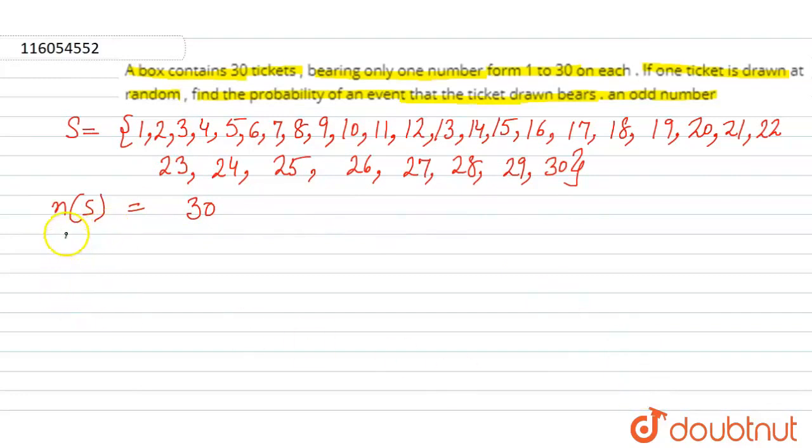Now we will find the probability. First, we have to take the event. Let O be the event for an odd number. Our event O will have the odd numbers from the sample space.